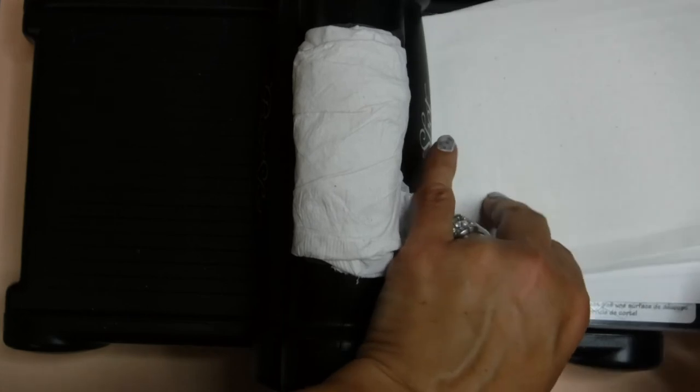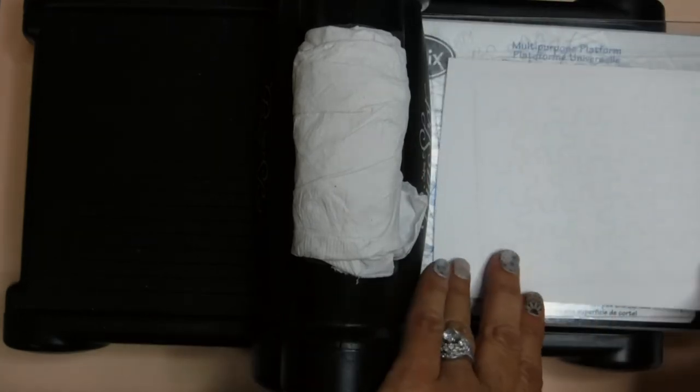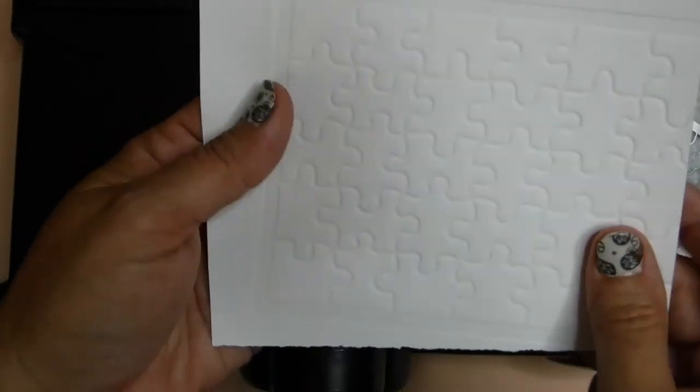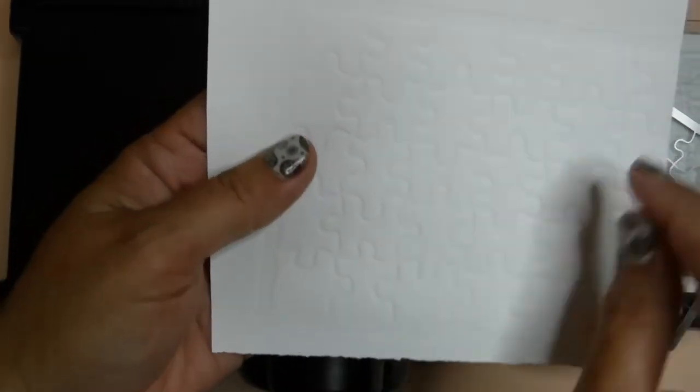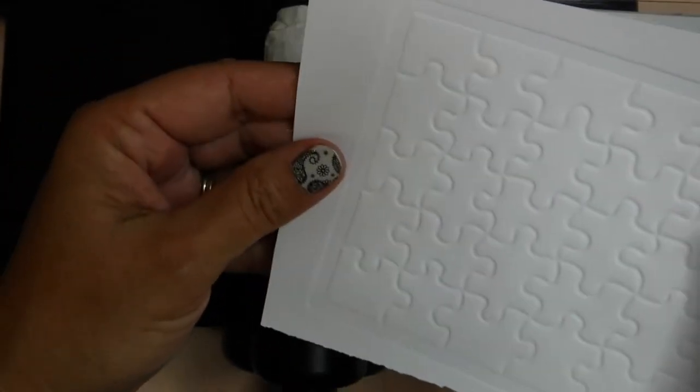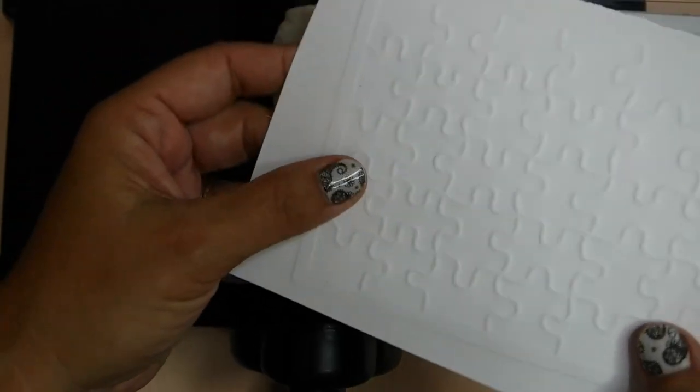And I take these off, oh see my die moved, but that's okay. This is a concept idea for you guys. You see this? Look how nicely it embossed this, look at that. And now if you want to, you can actually cut these out, fussy cut them if you want to do that, but it works very well.